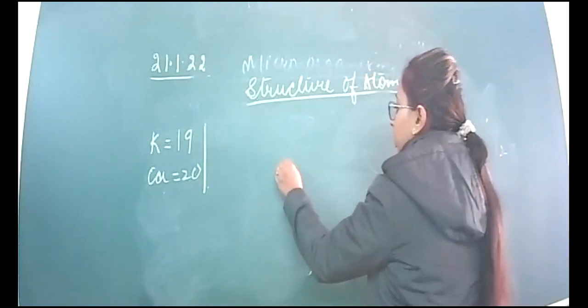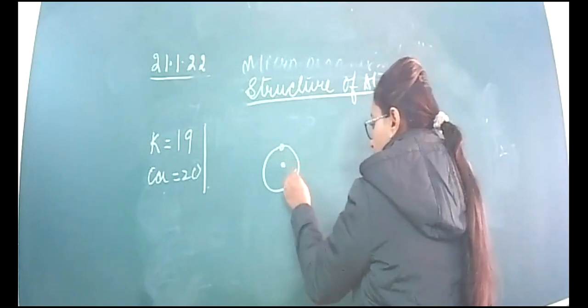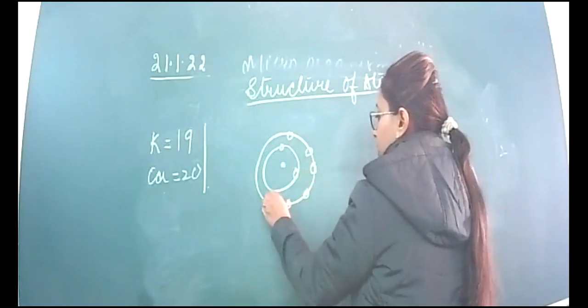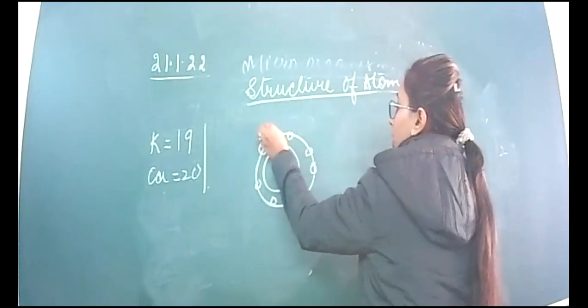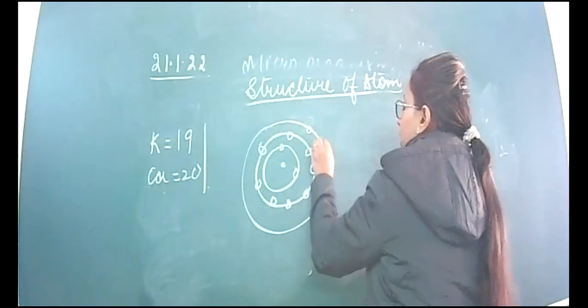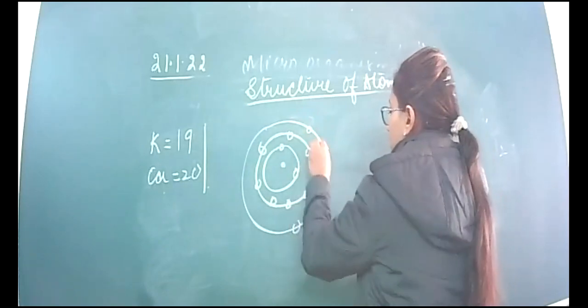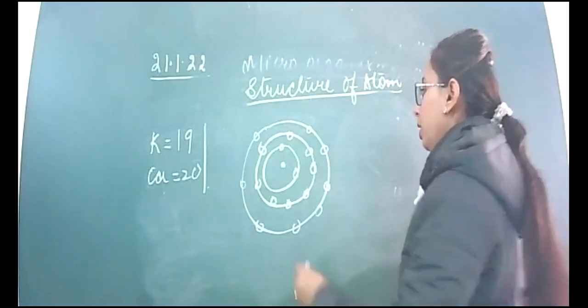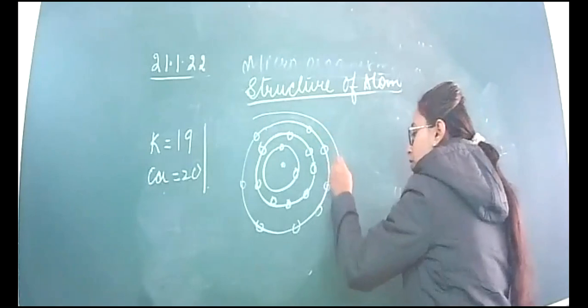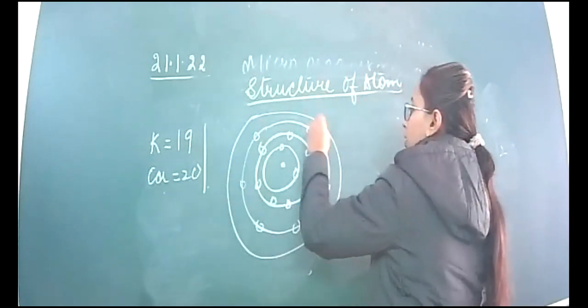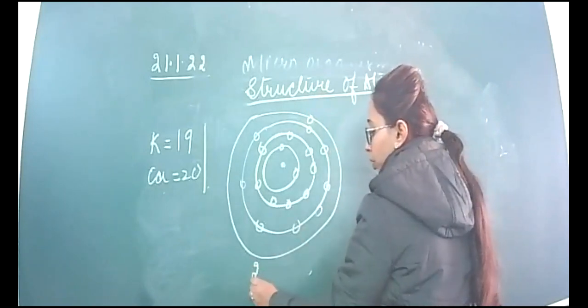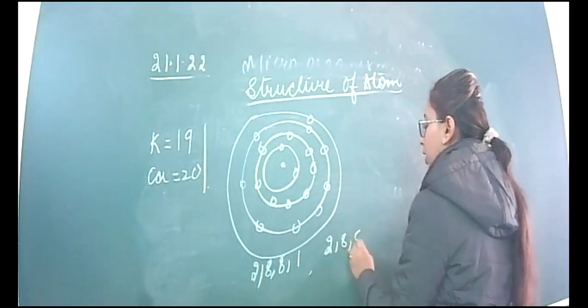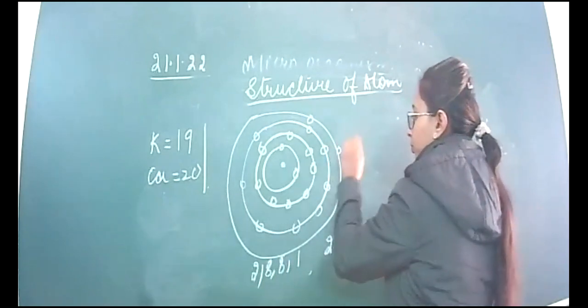So we have the nucleus, first shell has two electrons, second shell has 1, 2, 3, 4, 5, 6, 7, 8 electrons. Third shell again has eight electrons - 2 plus 8, 8 plus 8 is 18. And one more for calcium will come in the fourth shell - potassium and then calcium. The configuration will be 2, 8, 8, 1. Then there will be 2, 8, 8, 2 for calcium.